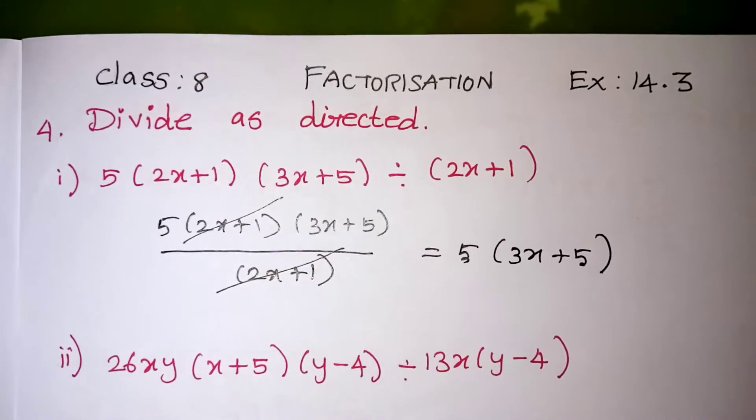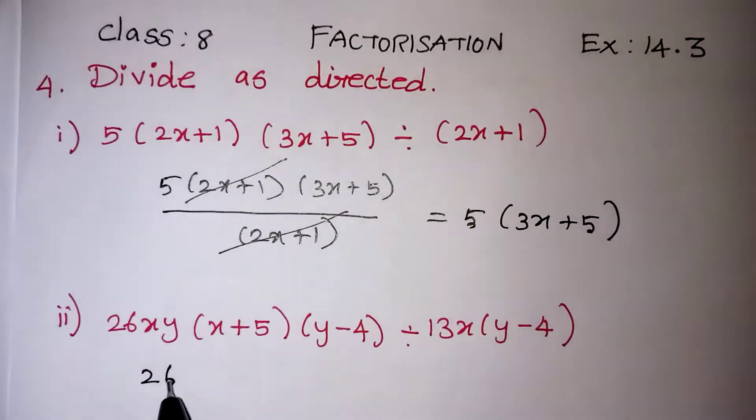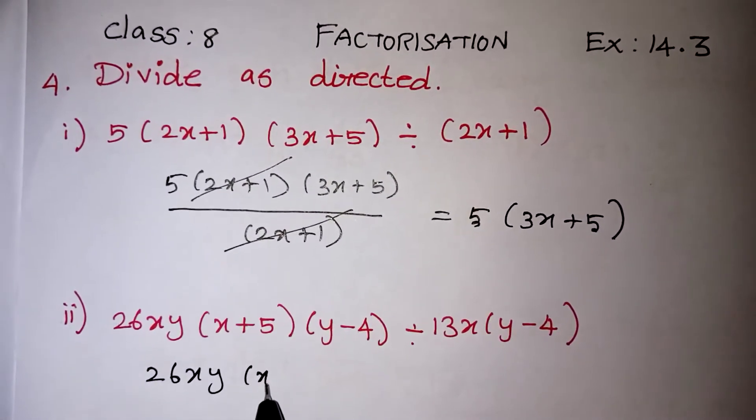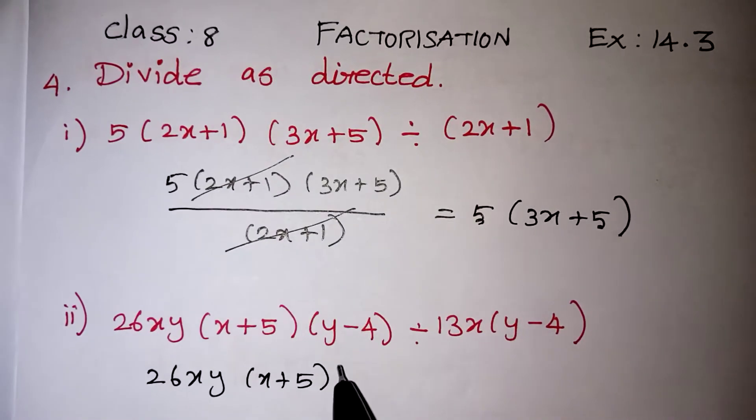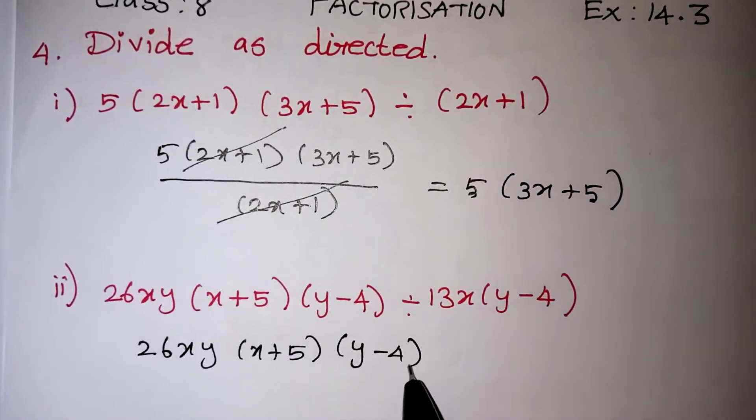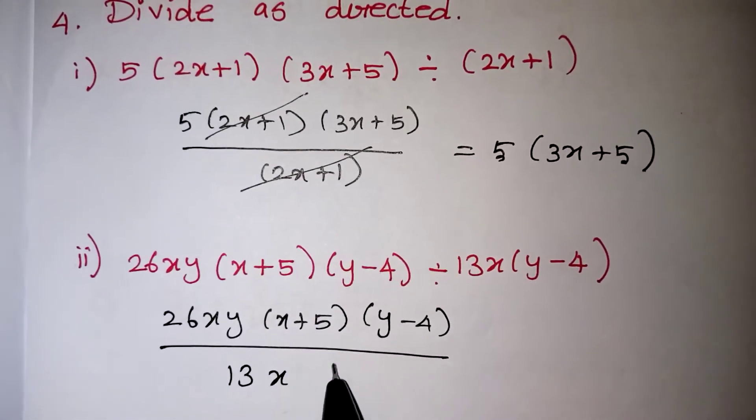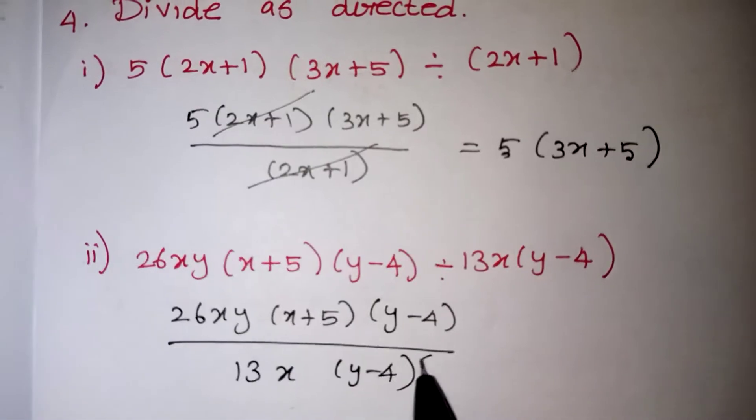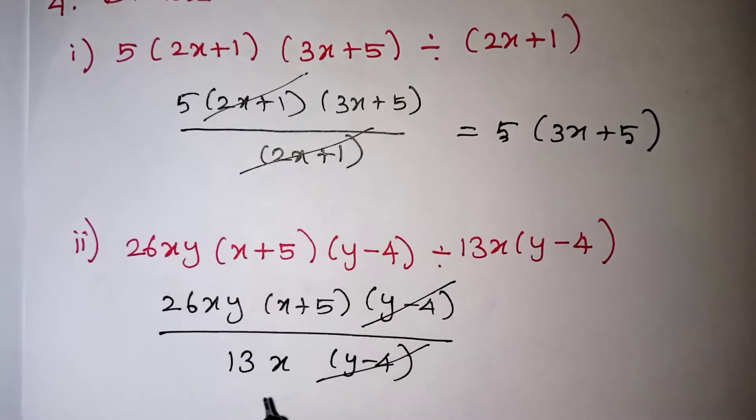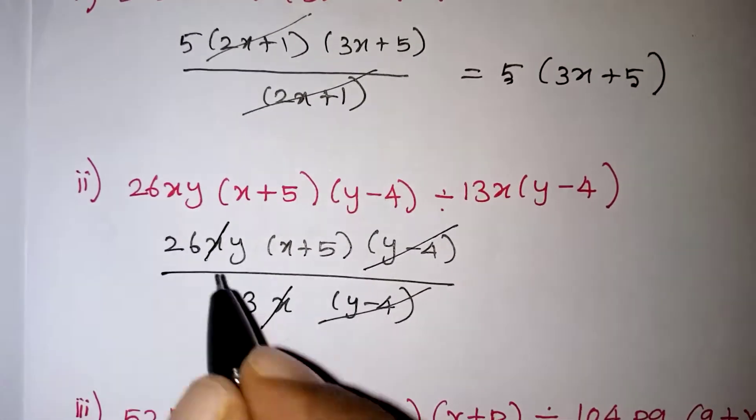Now we will move on to the next problem. Again the same way, the first term should be taken as a numerator: 26xy(x + 5)(y - 4) divided by 13x(y - 4). (y - 4) will get cancelled, x and x will get cancelled.